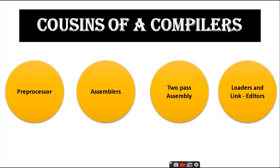For example, language extensions include a database query language embedded in C. Some compilations produce assembly code that is passed to an assembler for further processing. Assembly code is a mnemonic version of machine code in which names are used instead of binary codes for operations, and names are also given to memory addresses.